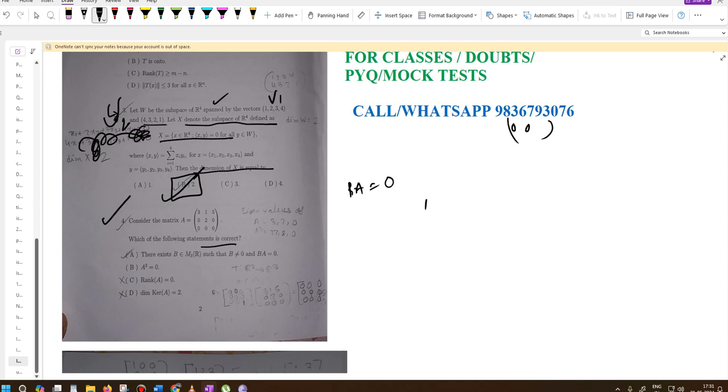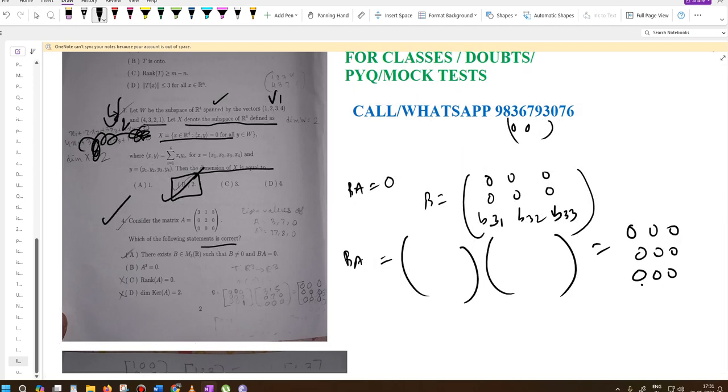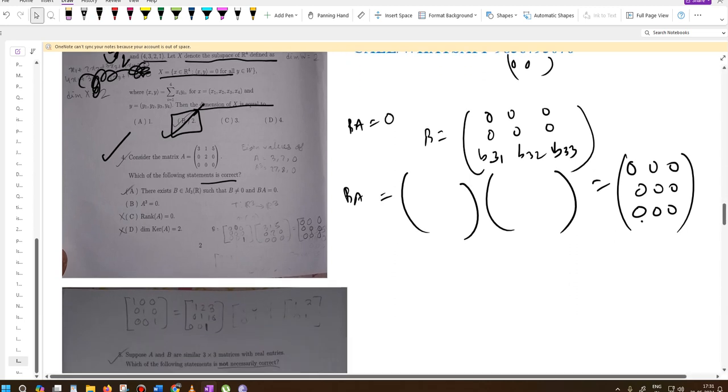Let matrix B have elements B31, B32, B33 in the third row. When we multiply matrix A with B, we get the zero matrix. Since the resulting product is the zero matrix, there exists a non-zero matrix B such that BA equals zero. Therefore, statement A is correct.